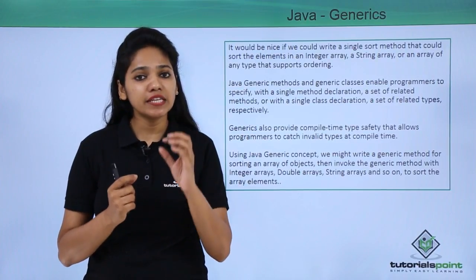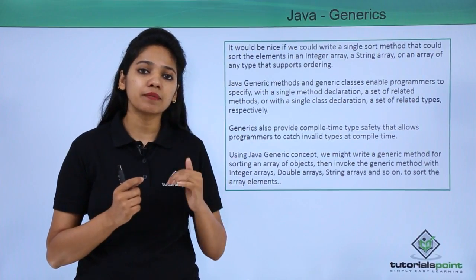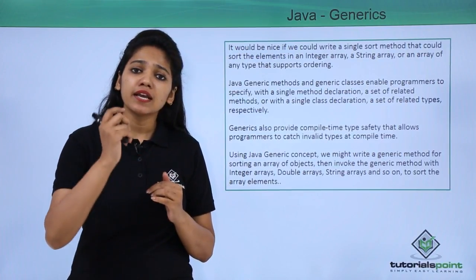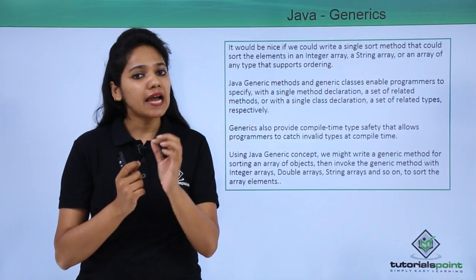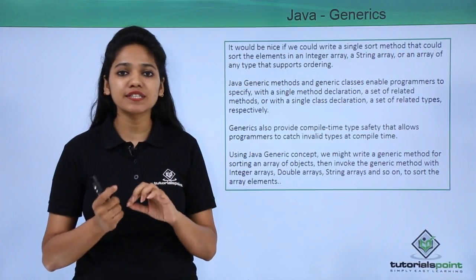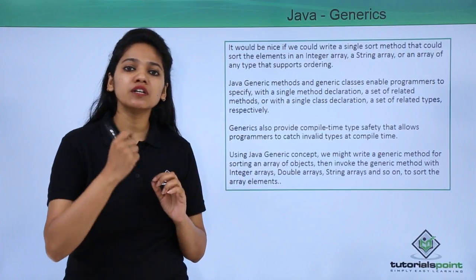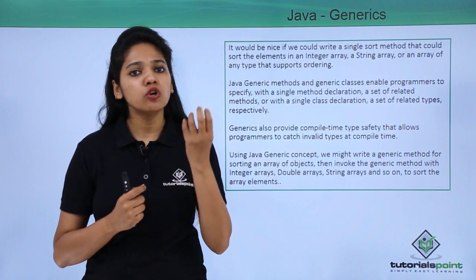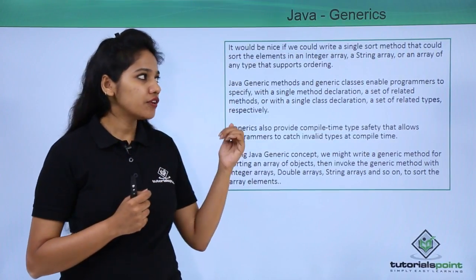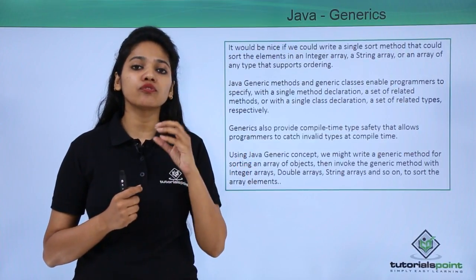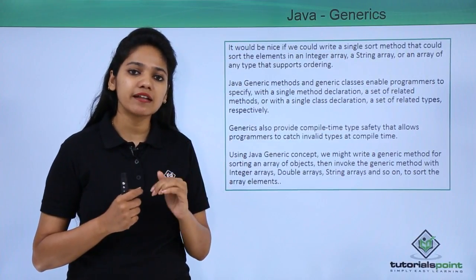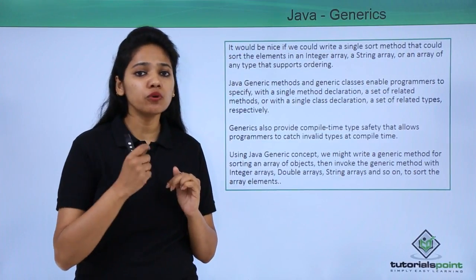If you receive an error at compile time, it is easy for you to handle. But if you receive a bug at runtime — that is at dynamic time, when your program is running — it becomes difficult to capture and resolve that error. Generics is a concept which allows you to find errors at compile time itself, which makes them easy to handle.